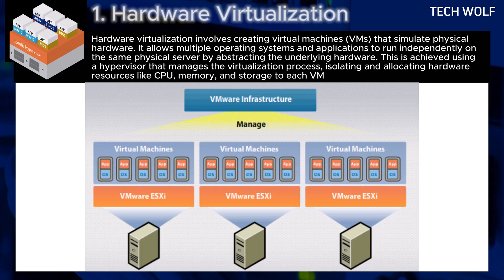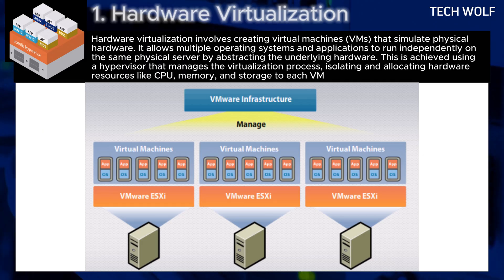For example, VMware ESXi allows an IT administrator to deploy multiple virtual machines on a single server. One virtual machine could run Windows Server for enterprise applications, while another runs Linux for development purposes — all isolated and sharing the same physical hardware.